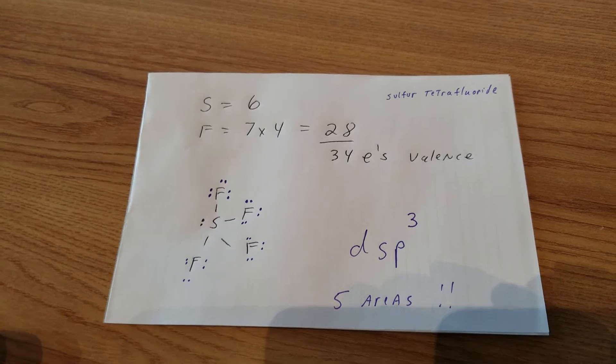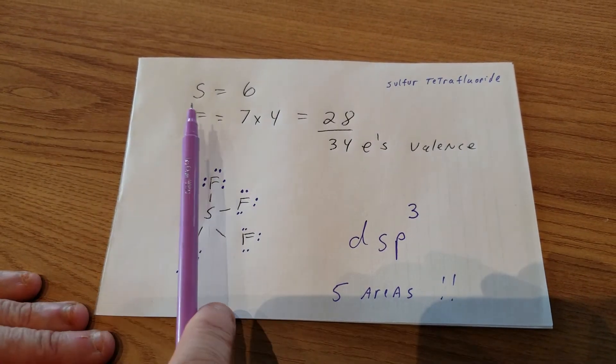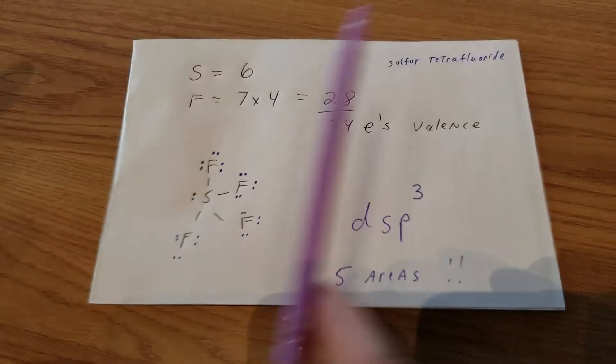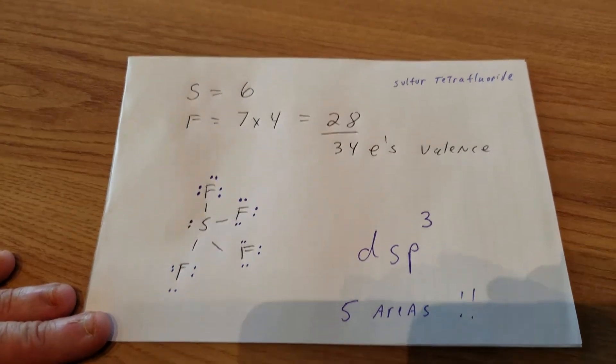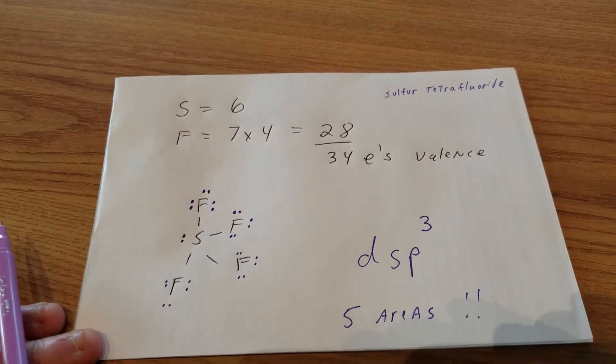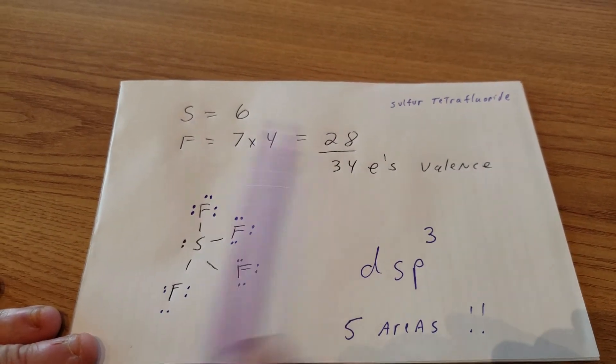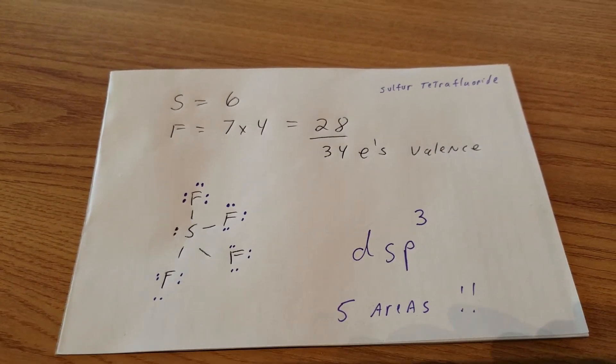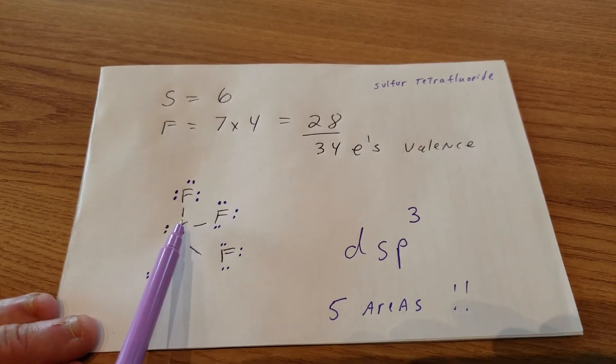Sulfur is in group 16, but we call it group 6. Fluorine is in group 7, or group 17, but we're going to call it 7. So sulfur has 6 valence electrons, fluorine has 7, and there's 4 of them. And therefore, 7 times 4 is 28. We add them up, we get a total of 34 valence electrons.